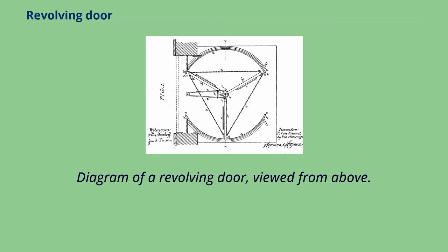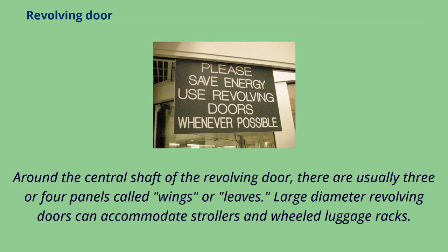Diagram of a revolving door, viewed from above. Around the central shaft of the revolving door, there are usually three or four panels called wings or leaves. Large-diameter revolving doors can accommodate strollers and wheeled luggage racks.